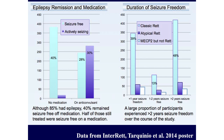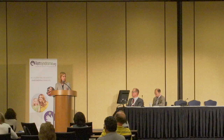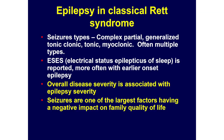As far as duration of seizure freedom, somewhere around 50% of patients with classical Rett syndrome did have a period of at least two years seizure-free. Seizure types in classical Rett syndrome: anything and everything is seen. Common types are complex partial seizures — those starting focally and affecting level of awareness — generalized tonic-clonic seizures, and myoclonic seizures, which are quick jerks. Patients often have multiple types of seizures and a mixture of focal and generalized.